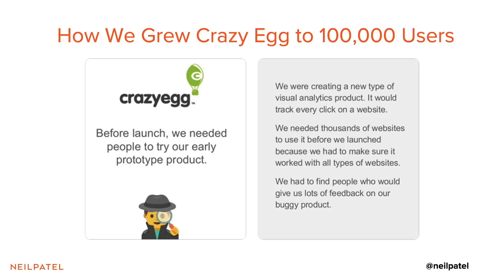So how do you appeal to customers that don't necessarily know that they need you? Well, because we were creating a new type of product, before we launched, we created a prototype. When we created a prototype, we went out to a lot of users, got their feedback, figured out what they thought about the product, what was useful, what they didn't like, and fixed all the bugs. But more importantly, we tried to figure out the right messaging by talking to those people.